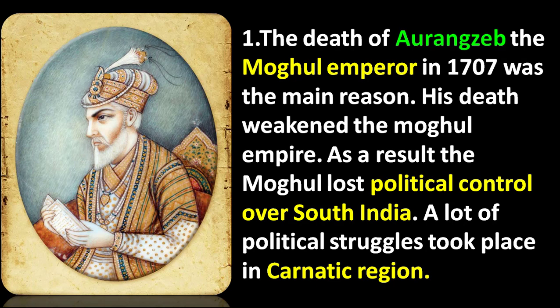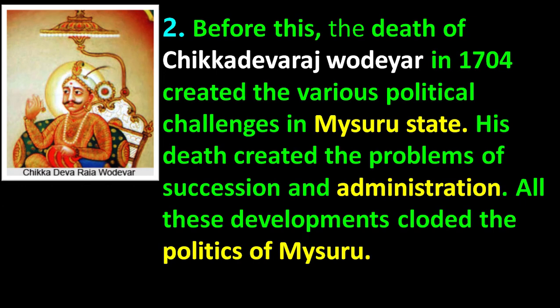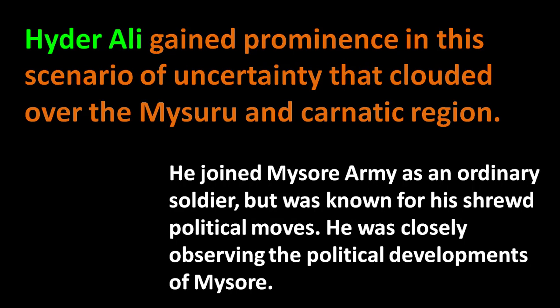Number one, the death of Aurangazeb, the Mughal Emperor, in 1707 was the main reason. His death weakened the Mughal Empire. As a result, the Mughals lost political control over South India and a lot of political struggles took place in the Carnatic region. The death of Chikkadevaraya Wadayer in 1704 created various political challenges in Mysuru state, including problems of succession and administration. All these developments clouded the politics of Mysuru.